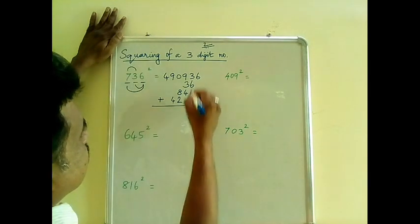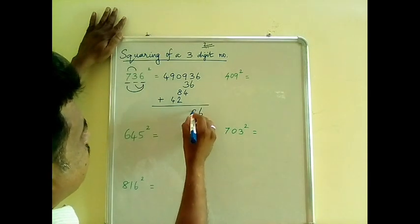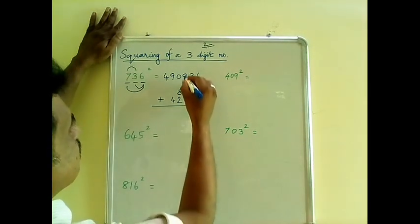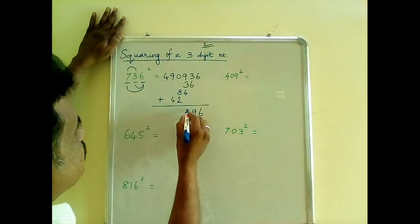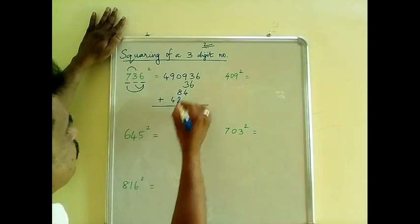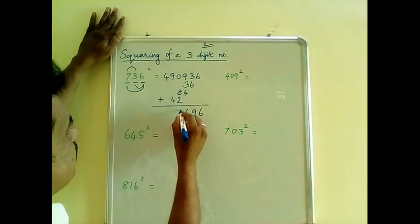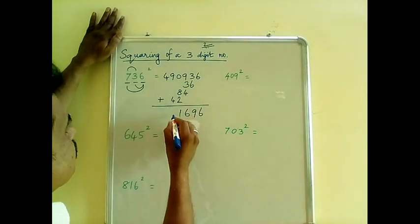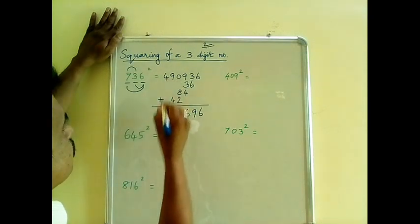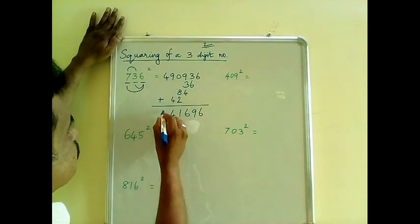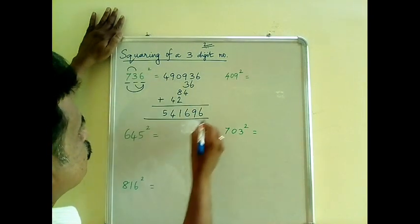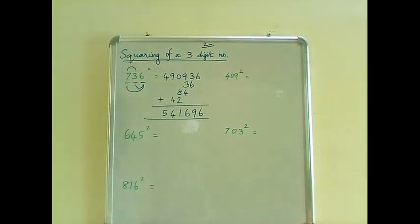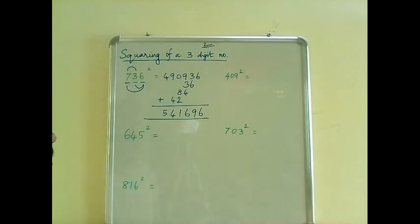So it's 6. 6 plus 3 is 9. 9 plus 3 is 12, plus 4 is 16 — balance 1. This is 10 plus 1 is 11 — balance 1. 10 plus 4 is 14 — balance 1. 1 plus 4 is 5. So the square of 736 is nothing but 541,696.